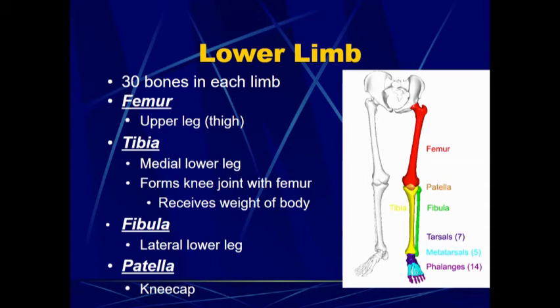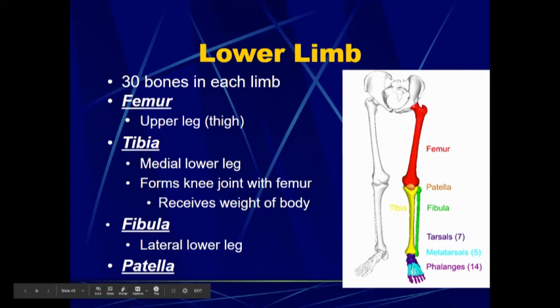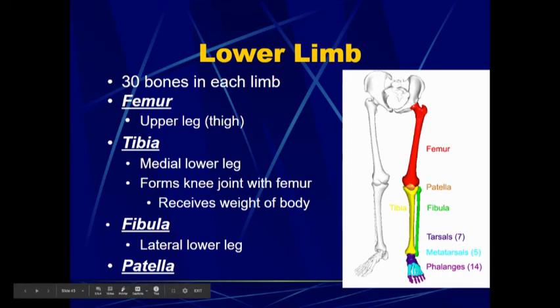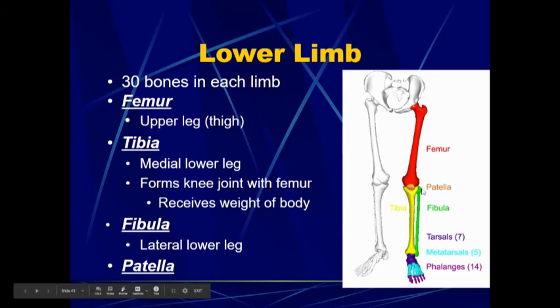In the lower leg, we have the tibia — that is the medial lower leg bone, receiving most of the weight of the body and forming most of the knee joint with the femur. The fibula is the lateral lower leg bone; it does not really receive much weight and is just there for extra support. If you have a hard time remembering tibia versus fibula, think of a fib as a little lie — the fibula is the smaller of the lower leg bones and is the lateral one. The patella is the kneecap.